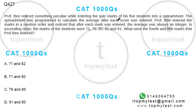This is a question which came up in ZAD previously. It's a pretty interesting one on averages. Professor B noticed something peculiar while entering the quiz marks of his five students into a spreadsheet. The spreadsheet was programmed to calculate the average after each score was entered. Professor B entered the marks in a random order and noticed that after each mark was entered, the average was always an integer in ascending order.